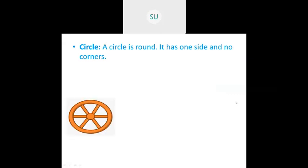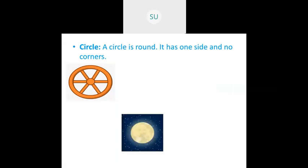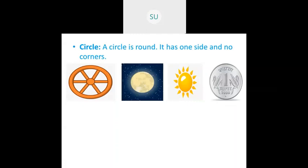A circle is round in shape and has no sides and no corners. Examples of circles include a wheel, the moon, the sun, and coins. Various other things that are round in shape are all circular.